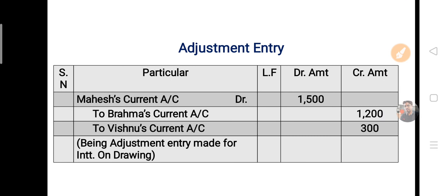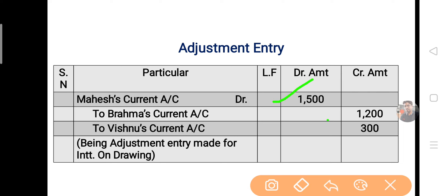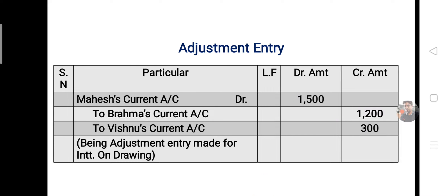Adjustment entry (current accounts क्योंकि fixed capital है): Mahesh's Current A/c Dr. 1,500 / To Brahma's Current A/c 1,200 / To Vishnu's Current A/c 300। Narration: Being adjustment entry for interest on drawings not charged। Entry का debit और credit हमेशा बराबर होना चाहिए।